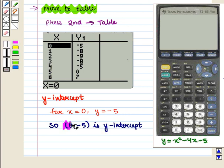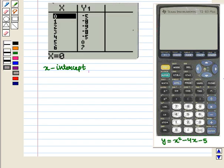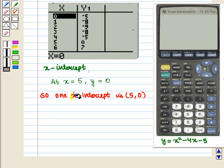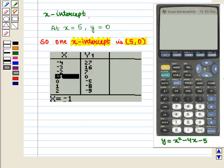So the ordered pair (0, -5) is y-intercept. Now to find x-intercepts, we see those values of x where y coordinate is 0. We scroll down and we see here at x = 5, y = 0. So one x-intercept is the ordered pair (5, 0). For other x-intercept, we scroll up.